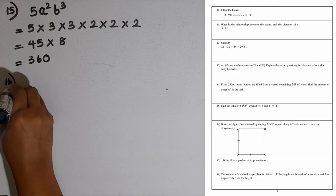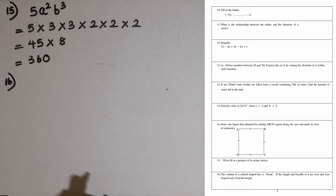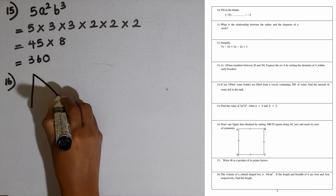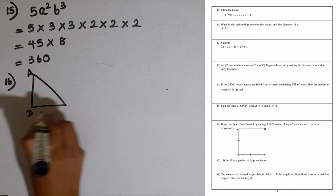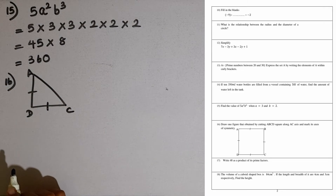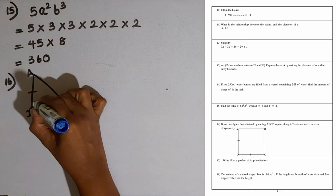Question number 16. Draw one figure obtained by cutting square ABCD along the AC axis and mark its axis of symmetry. We get two triangles. I will draw one triangle: triangle ABC. These two sides are equal in length, so this is an isosceles triangle. The axis of symmetry can be taken as the perpendicular bisector of the base.